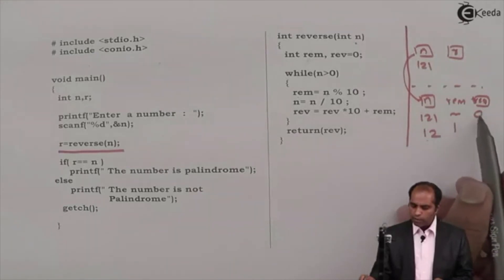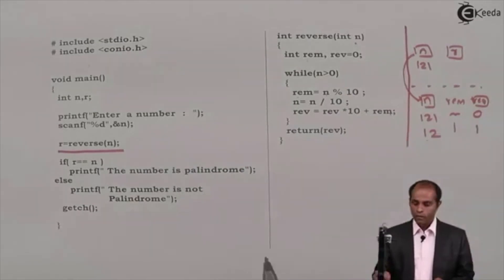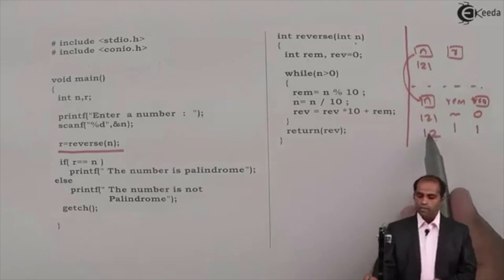So 12 and here this is 1. So it says rev equals to rev into 0 into 10 that is 0 plus rem that is 1. So rev is 1. Again go back, n is greater than 0. True.